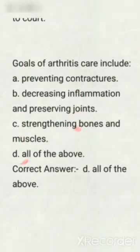Next question: goals of arthritis care include — options are: preventing contractures, decreasing inflammation and preserving joints, strengthening bones and muscles, all of the above. Correct answer: option D, all of the above.